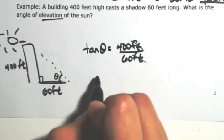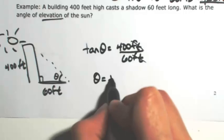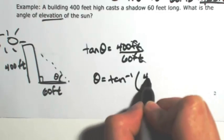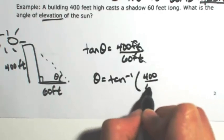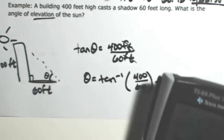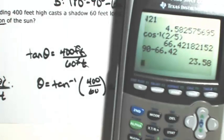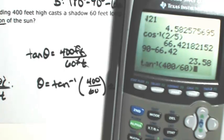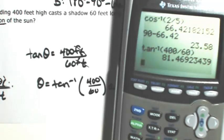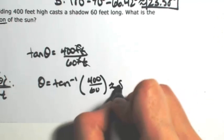To get theta by itself, we take the inverse tangent of 400 over 60. In degrees, the inverse tangent of 400 over 60 is approximately 81.47 degrees.